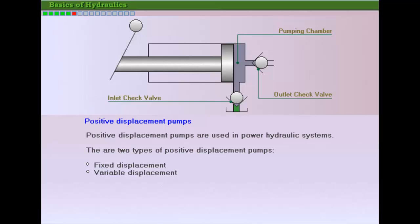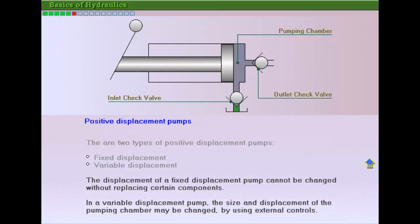Positive displacement pumps are used in applications where a confined fluid is used as a medium for power transmission under pressure. Positive displacement pumps are of two types, fixed and variable displacement pumps. In a fixed displacement pump, the displacement is constant and can be varied only by replacing certain parts within the pump.